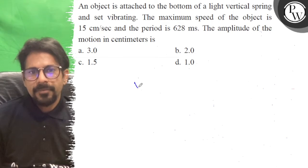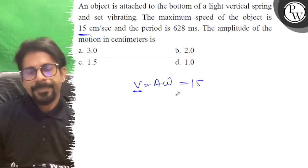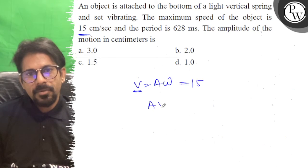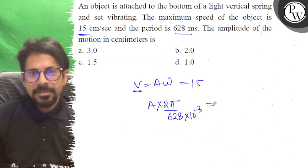So v is equal to a omega. And this is maximum, also 15, and a into omega 628, so 2 pi by capital T, 628 millisecond into 10 to power minus 3 is equal to 15.